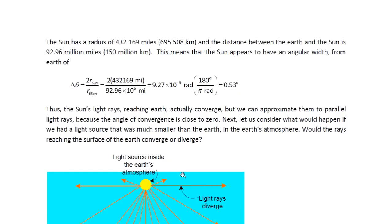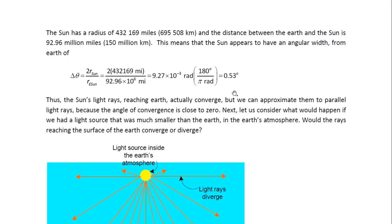The angle of convergence is the same as the angular width of the sun as seen from earth, given by the diameter divided by the distance between the earth and the sun. The diameter is twice the radius, and we get an angle of 9.27 × 10⁻³ radians. Converting using the factor of 180 degrees equals pi radians, we get an angle of 0.53 degrees, which is very close to zero. So we can approximate light rays coming from the sun as being parallel to each other.